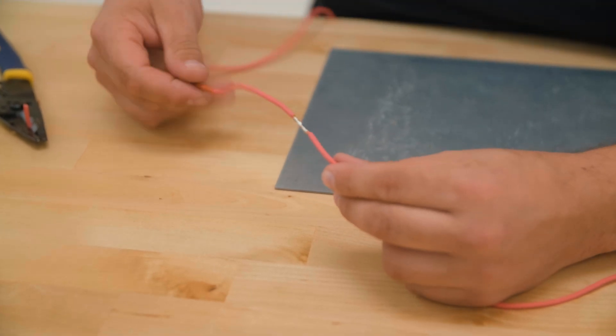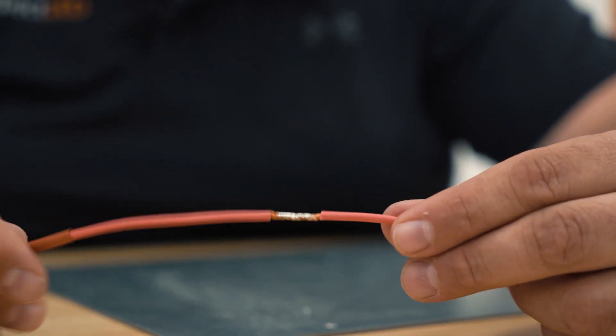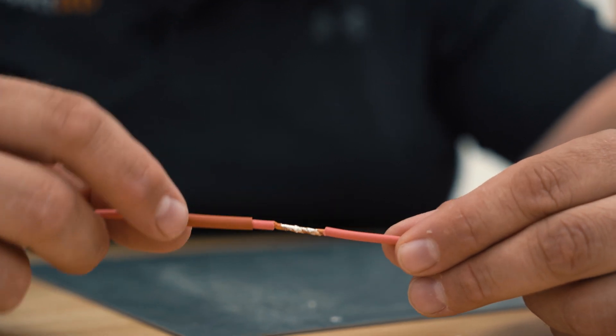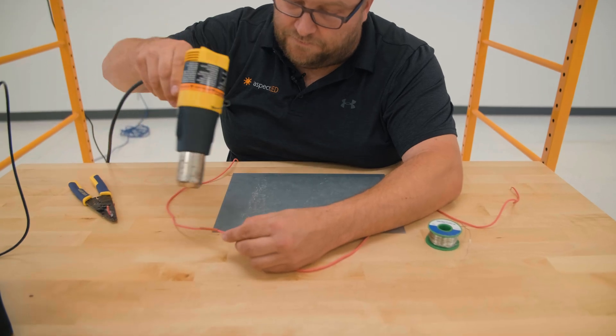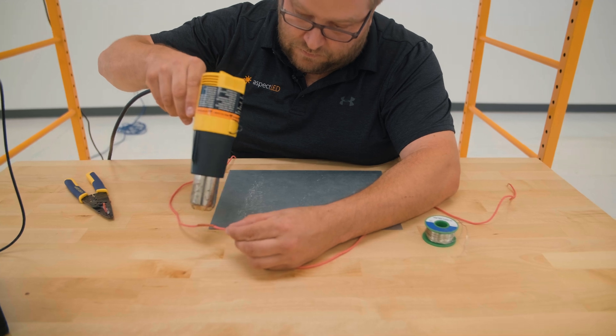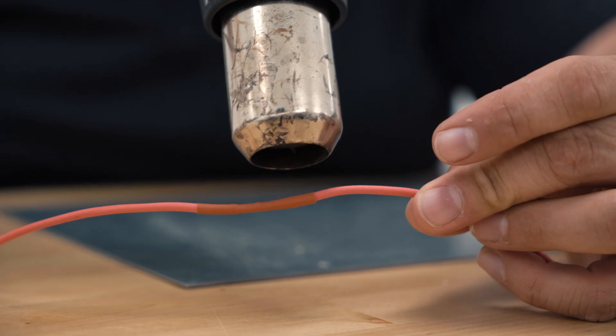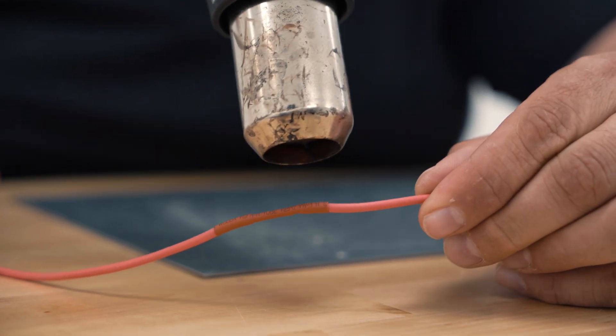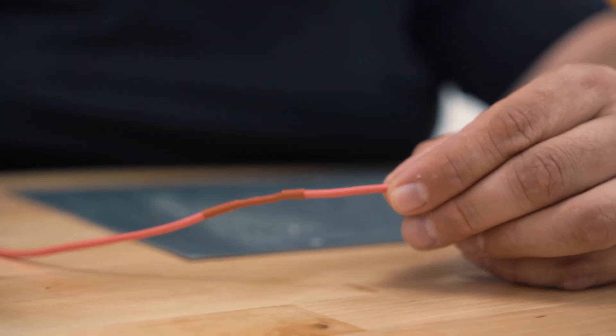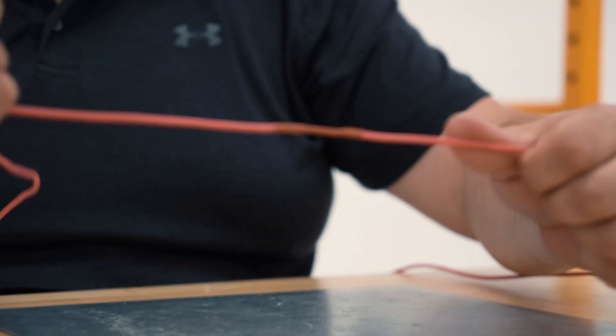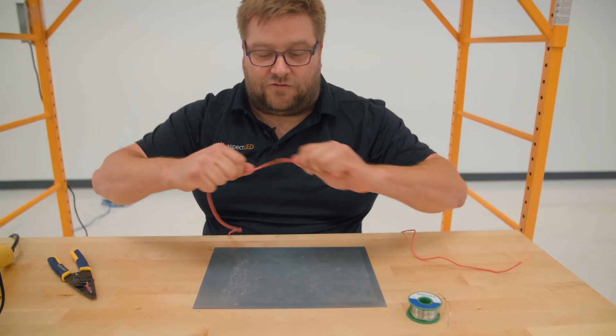Now that heat shrink tubing that we slid on in the beginning, we can slide it right over the joint like this. Hit it with the heat gun. Now we have a nice, strong joint.